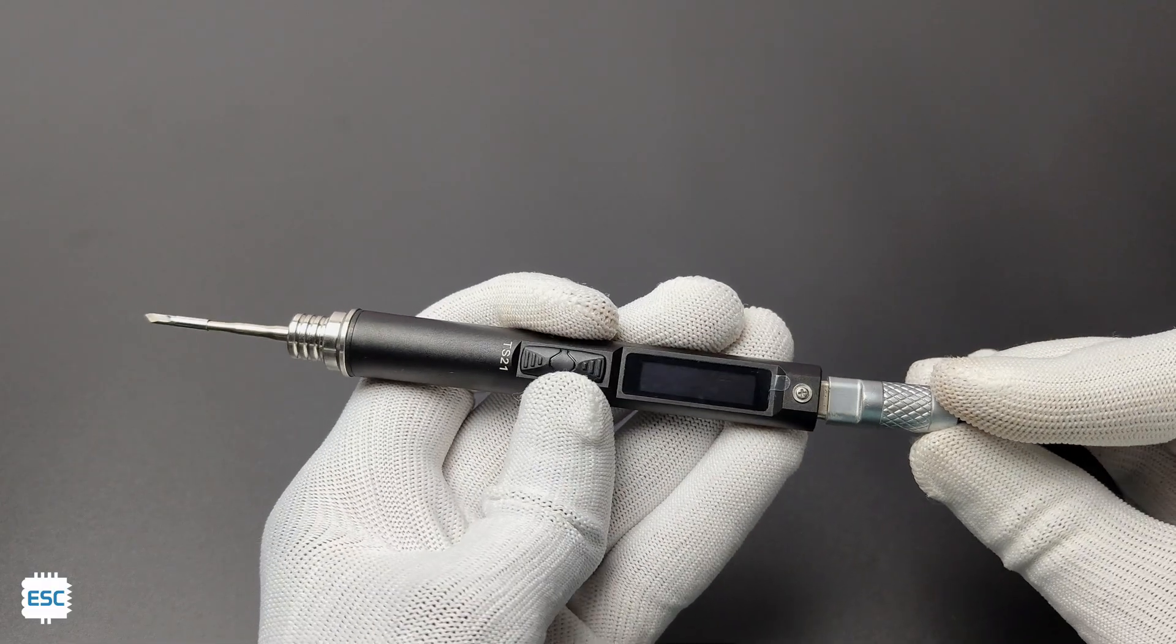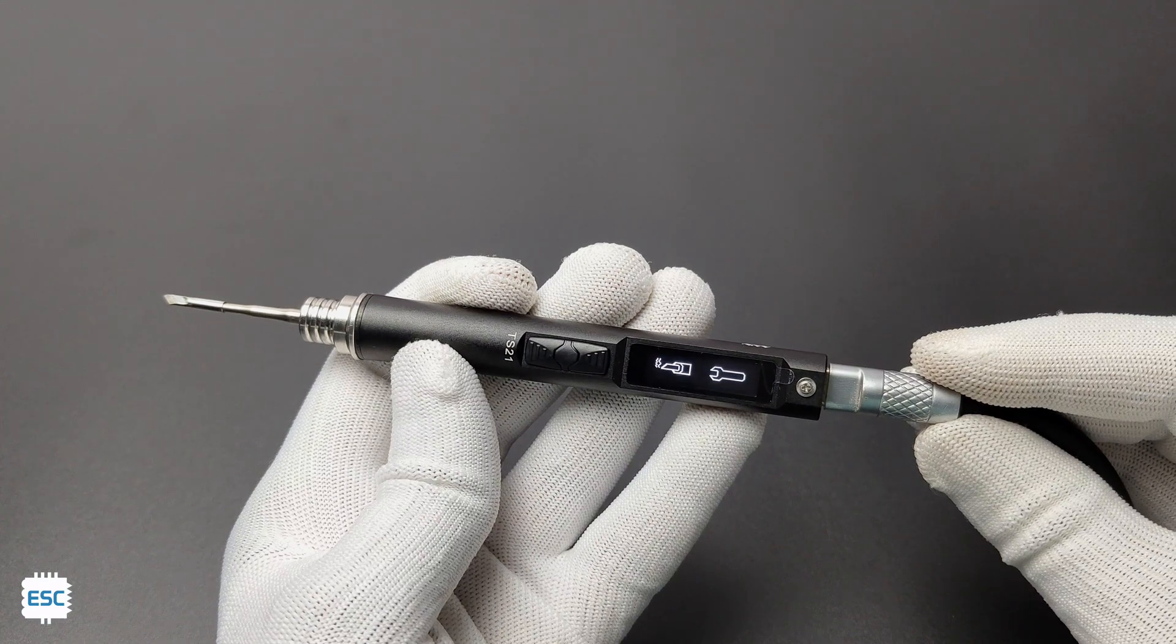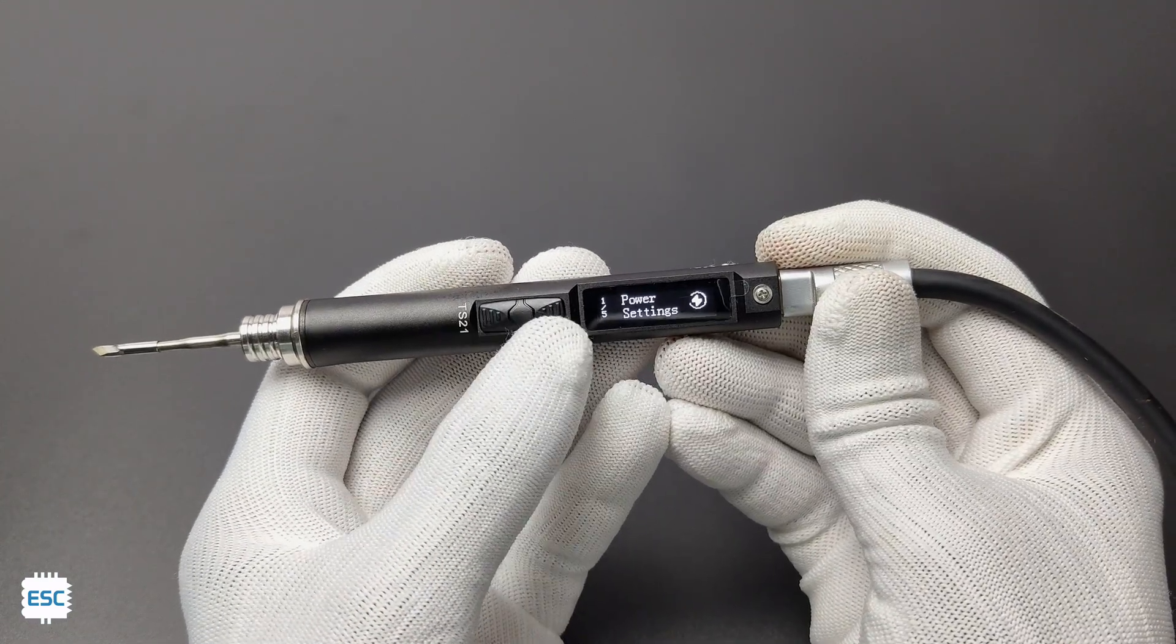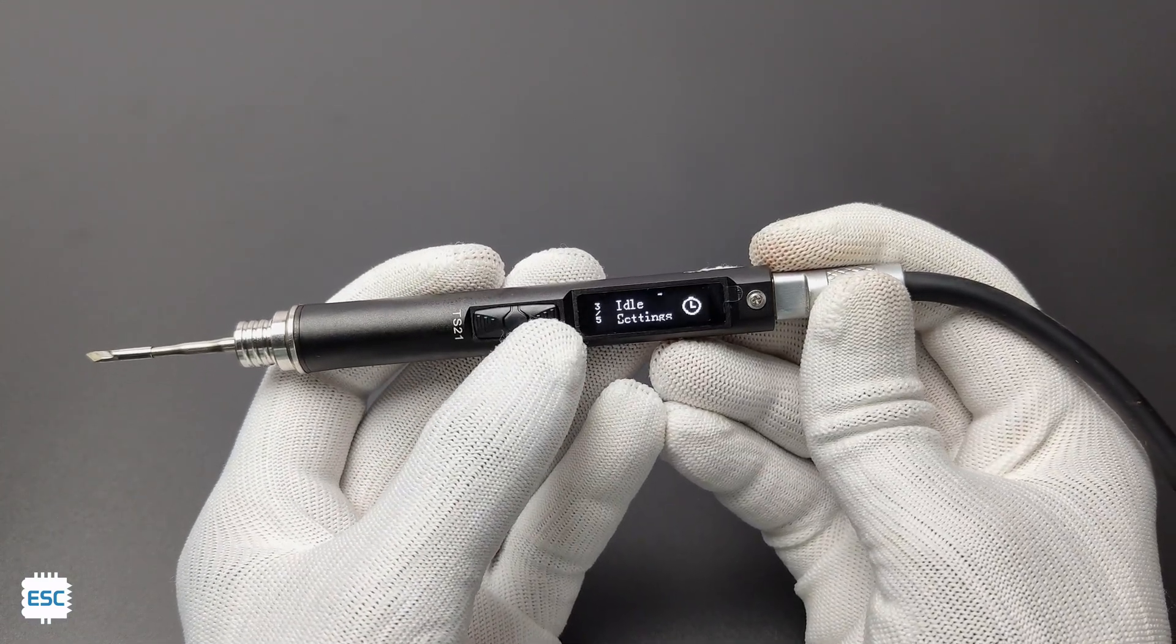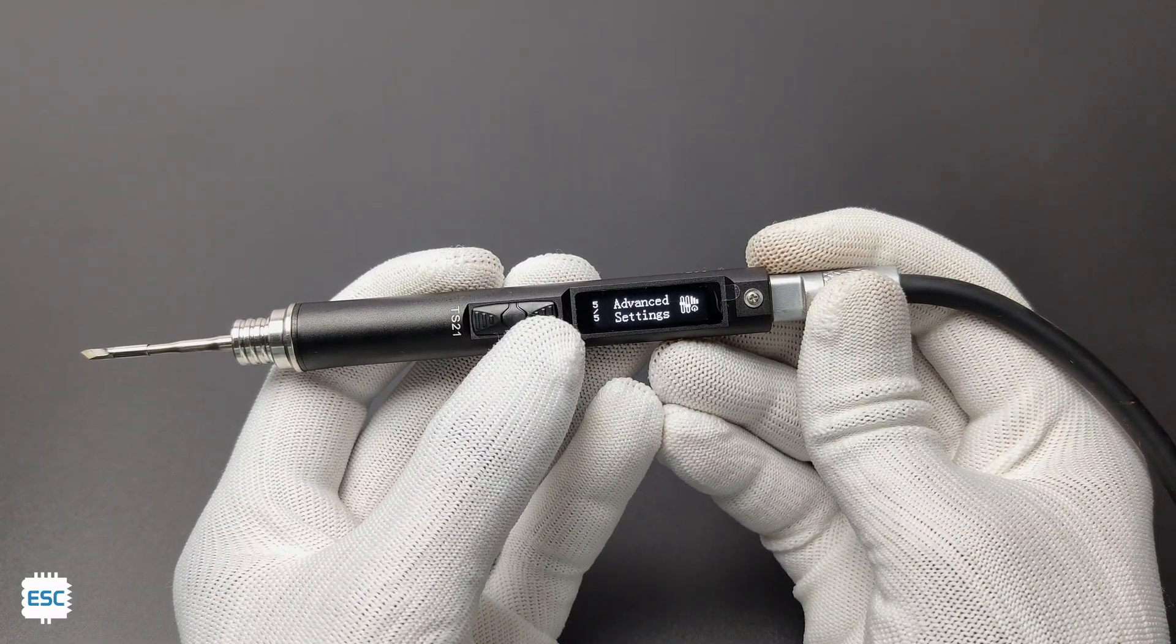After connecting the power, now you can see the display. Settings and menu is similar to other Miniware products and we can navigate using these two buttons. In the settings menu, we can set sleeping time, sleeping temperature, working temperature, etc.